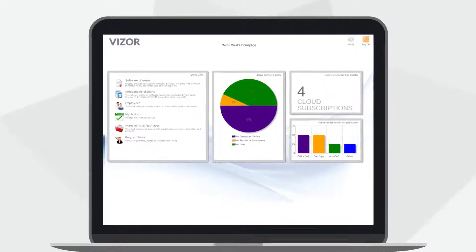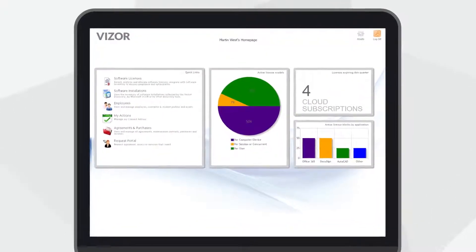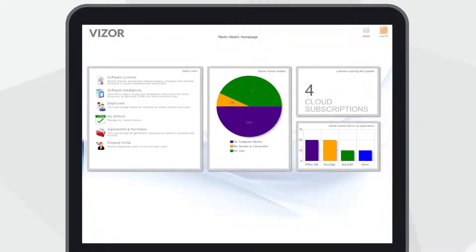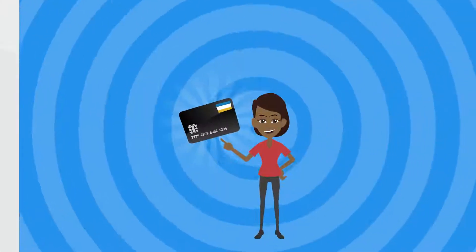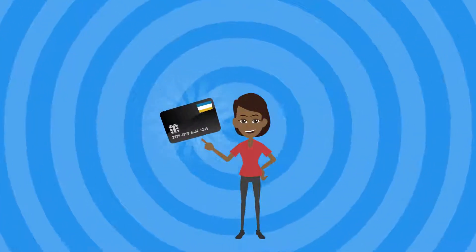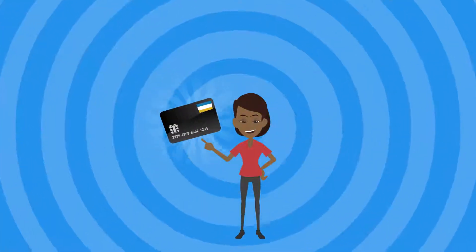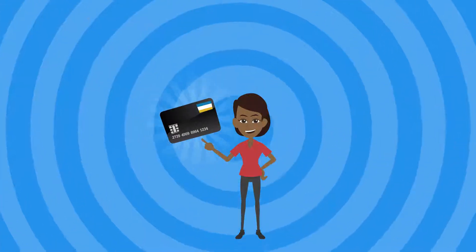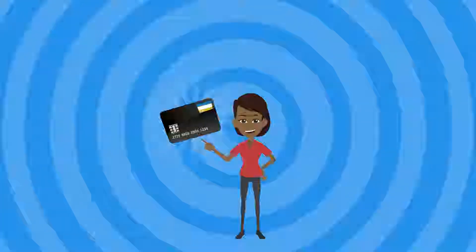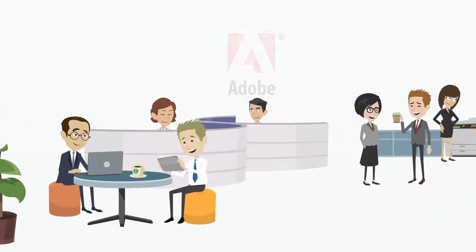Vizor's cloud discovery monitors financial transactions at a per-line-item level to uncover SaaS and cloud purchases and their cost to your organization. Once discovered, Vizor provides central visibility, so it's easy to allocate required services to employees, departments, and projects.